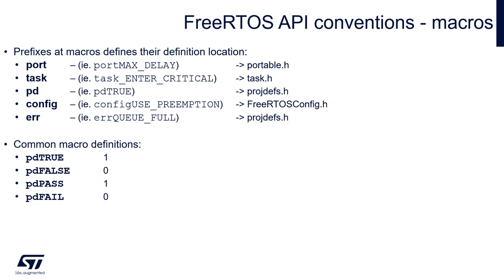All macros have prefixes specifying where the macro is located. For example, 'port' — like portMAX_DELAY — is located within portmacro.h and is typical for the architecture being used. The 'task' prefix — like taskENTER_CRITICAL — is located in task.c or task.h. Then 'pd' refers to project defines, like pdTRUE. Then 'config' — like configUSE_PREEMPTION — is located in FreeRTOSConfig.h. And 'err' — like errQUEUE_FULL — is defined in project defines as well.